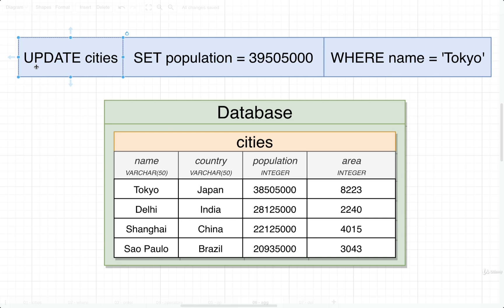We're going to write out a keyword of UPDATE, then list the name of the table that we want to make an update to. We'll then use a new keyword called SET. SET is going to describe the property that we want to change on some record — in this case, we're going to set the population value to 39,505,000. And then finally, we're going to specify exactly which records we want to update by using a WHERE statement.